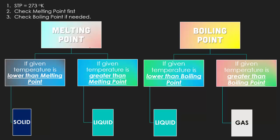If STP is greater than the melting point, that means it's a liquid. When you have done both of those, you go over to the boiling point. If the given temperature is lower than the boiling point, then it's going to be a liquid. But if the given temperature is greater than a boiling point, it is considered to be a gas.